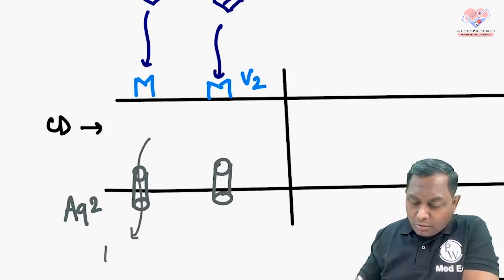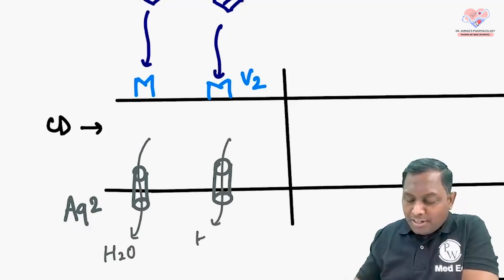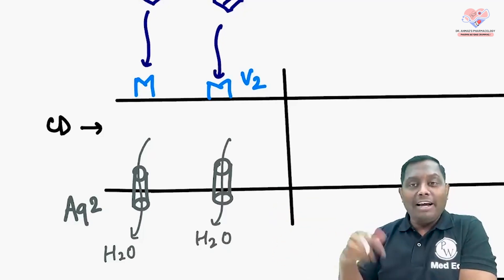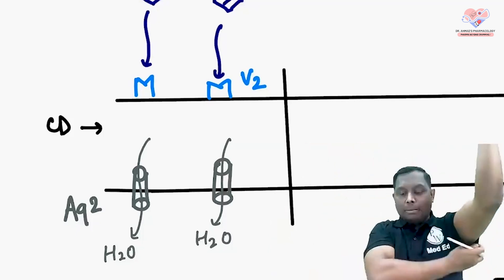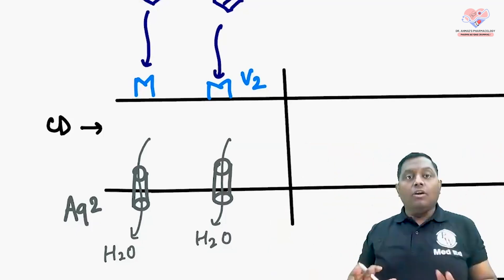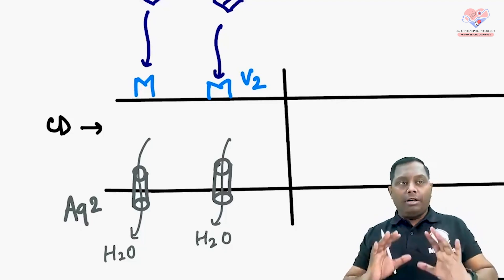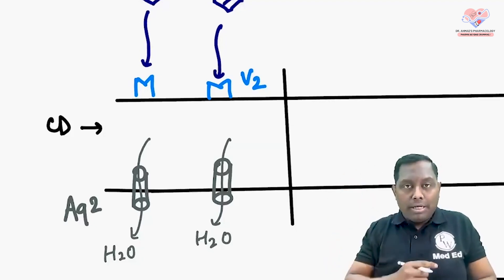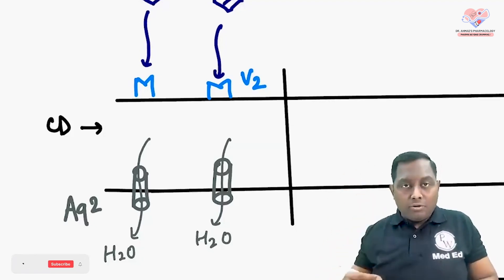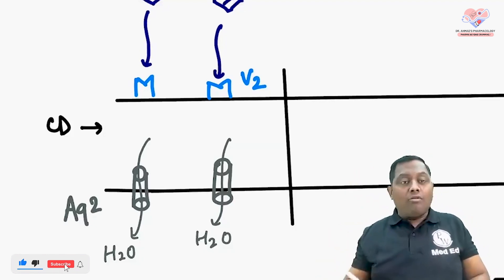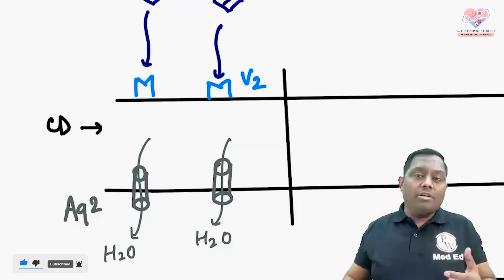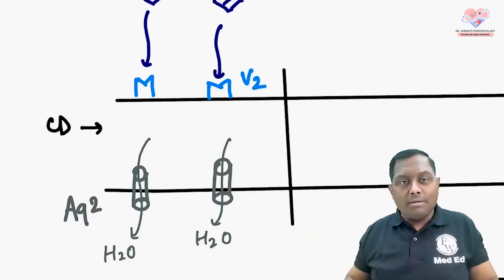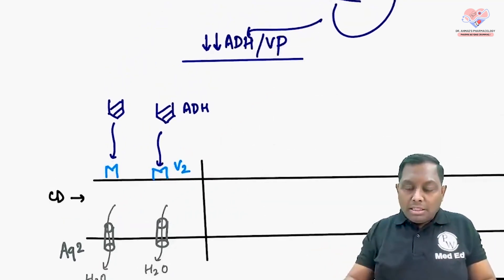Aquaporin-2 are pure water channels, so they cause more and more reabsorption of water. This is why it is called anti-diuretic hormone — 'diuresis' means more urine output, 'anti' means the opposite. ADH causes water reabsorption. For example, in a very hot climate, the body needs to save water, so the posterior pituitary releases ADH, which acts on V2 receptors and upregulates aquaporin-2.